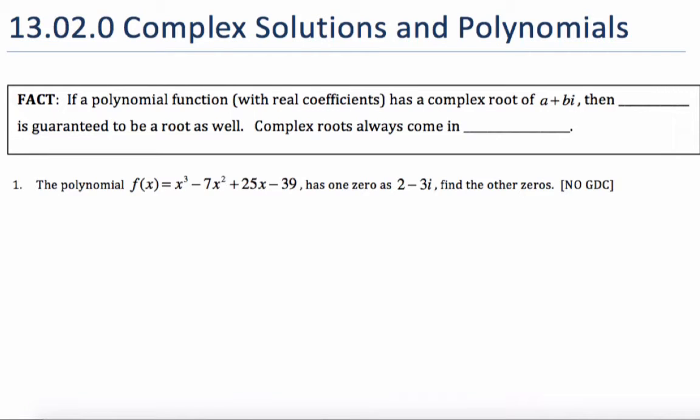We're going to talk about complex solutions and polynomials today. One fact that is true: if I have a polynomial with a complex root of a + bi, then a - bi, the conjugate, is guaranteed to be a root as well. Complex roots always come in pairs. This is true if my coefficients are all real numbers.